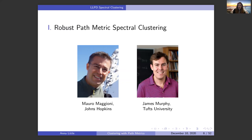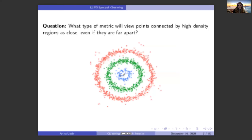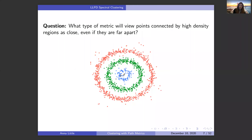For robust pathmetric spectral clustering, this is joint work with Mario Maggioni at Johns Hopkins and James Murphy at Tufts. The key question we answer is: what type of metric will view points connected by high-density regions as close, even if they are far apart in terms of Euclidean or even geodesic distance?